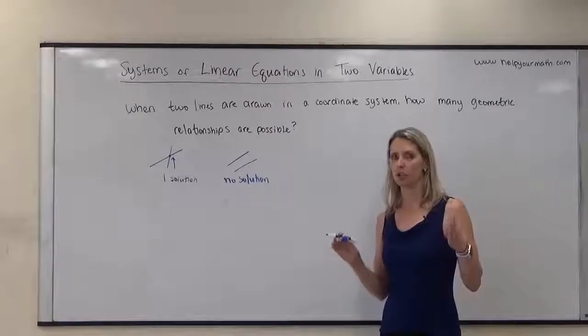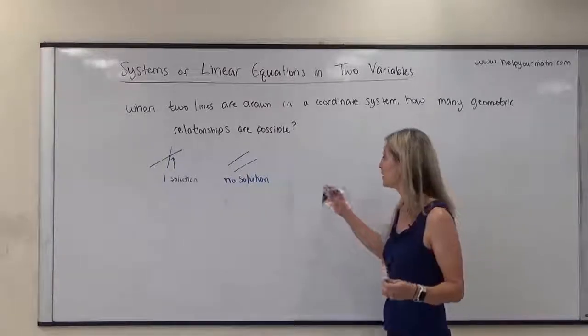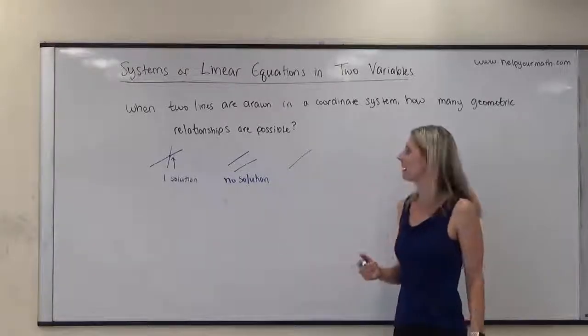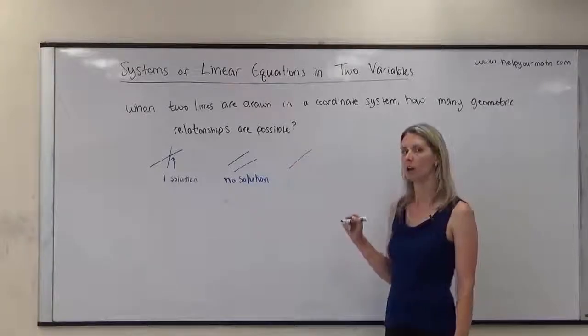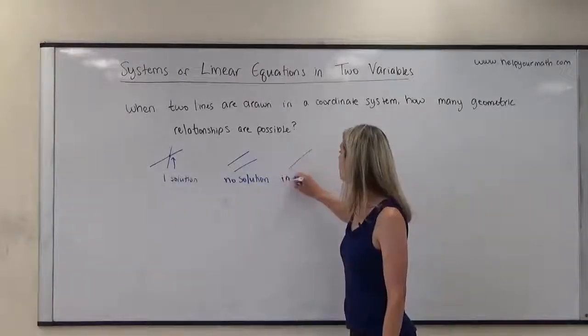The third thing that two lines could do is they could actually overlap with each other. They could actually be the same line. In that case, any point that's a solution of one equation would also be a solution of the other equation, and there would be infinitely many solutions.